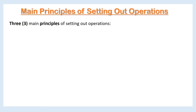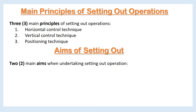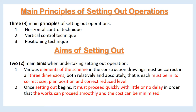There are three main principles of Setting Out operations: 1. Horizontal control technique, 2. Vertical control technique, 3. Positioning technique. There are also two main aims when undertaking a Setting Out operation: 1. Various elements of the scheme in the construction drawings must be correct in all three dimensions, both relatively and absolutely — that is, each must be in its correct size, plan position, and correct reduced level. 2. Once setting out begins, it must proceed quickly with little or no delay so that works can proceed smoothly and costs can be minimized.